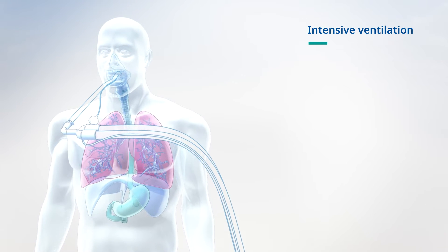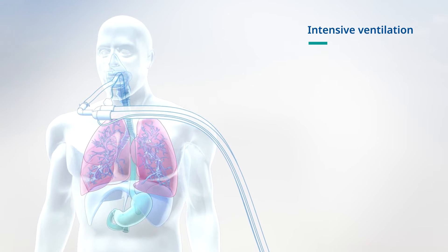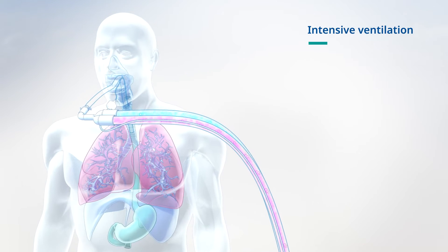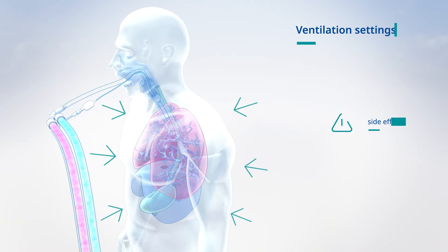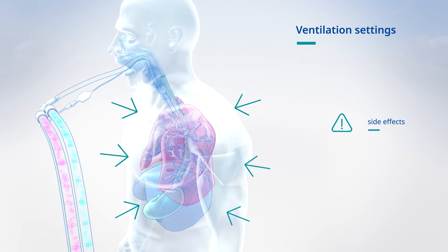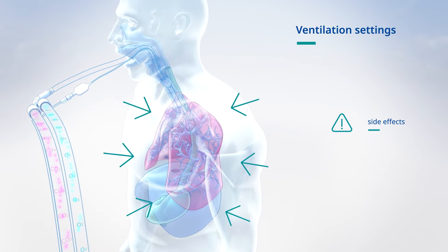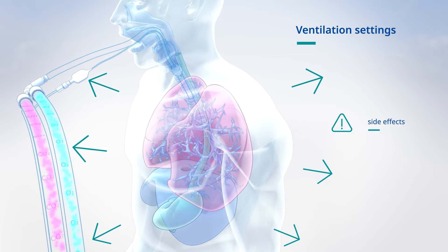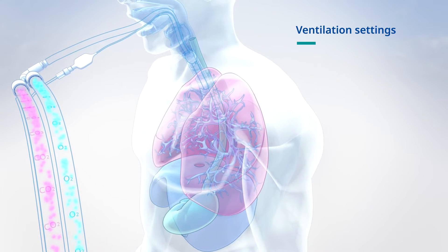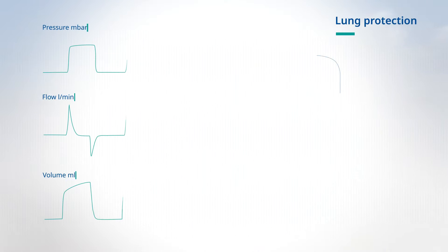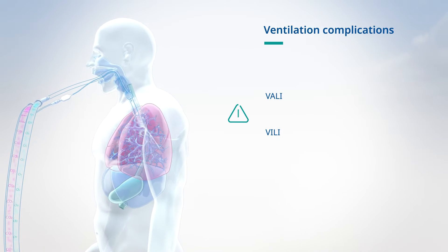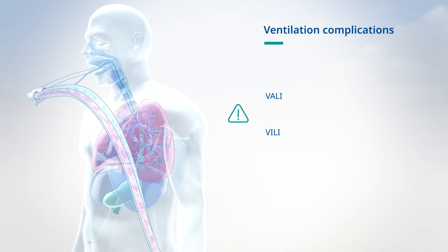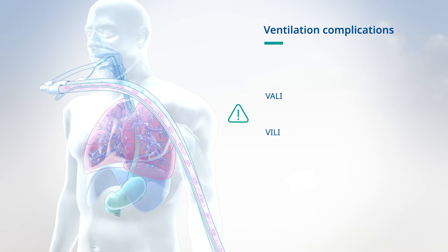Intensive ventilation has become the standard bridging measure to ensure oxygen supply and CO2 elimination in acute respiratory insufficiency. Our understanding of this life-sustaining therapy's side effects is growing. Adjusting the ventilation settings to the respective clinical situation is demanding and time-consuming. This includes continuously determining the necessary PEEP and the avoidance of end-inspiratory overdistension. The effects of pressure and volume on the ventilated lung are associated with ventilator-induced lung injury.